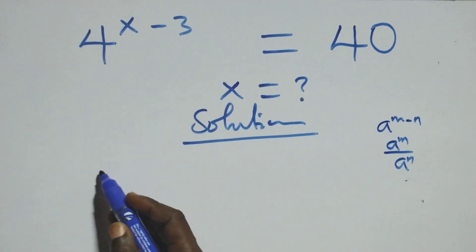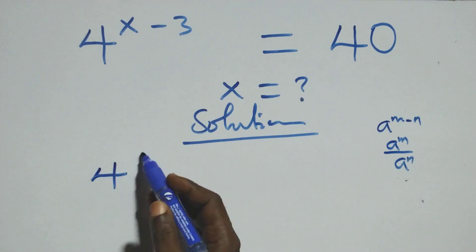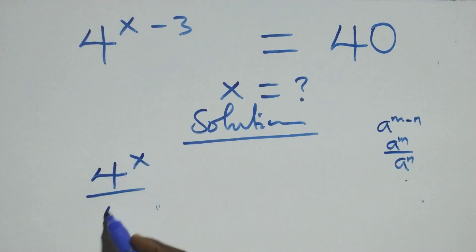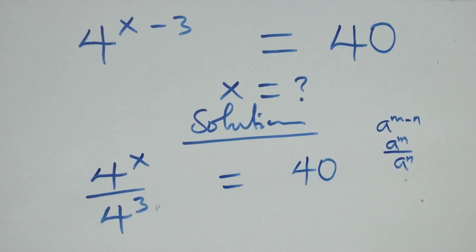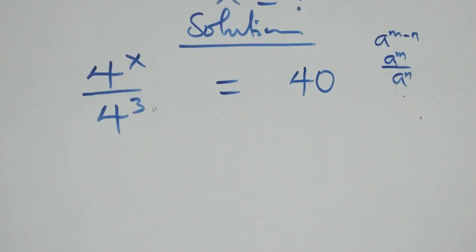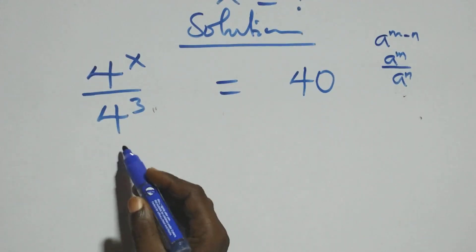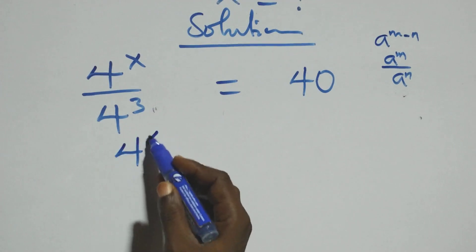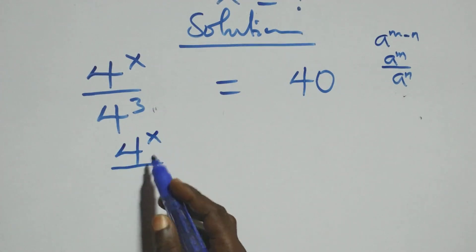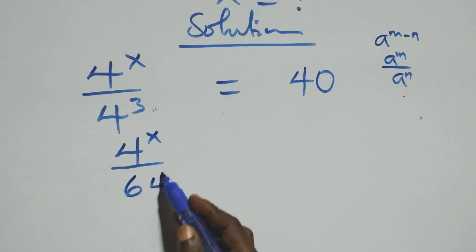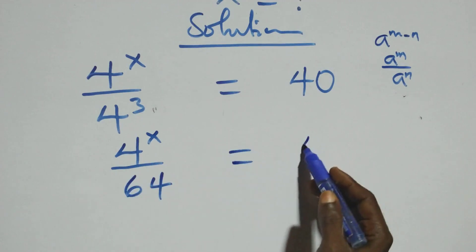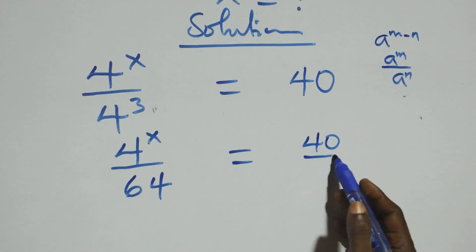This becomes 4 raised to power x over 4 raised to power 3 equals 40 on this side. This is the same thing as 4 raised to power x over 4 raised to power 3, where 4 multiplied 3 times is 64. We can write the right side as 40 over 1.